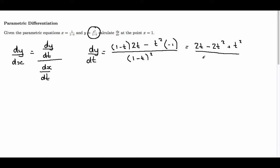All divided by (1 minus t) squared. This simplifies to (2t minus t squared) over (1 minus t) squared.